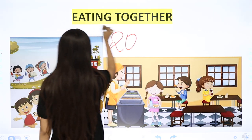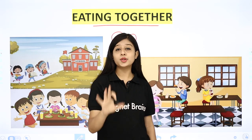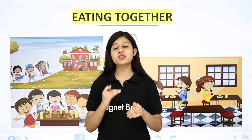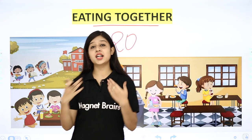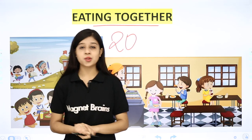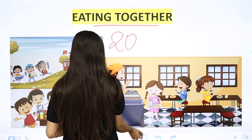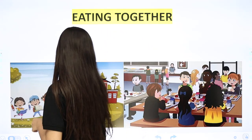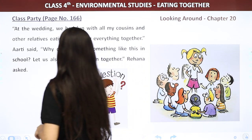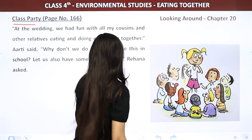This chapter is basically about that only — ki kaise eating together ek fun hai. Ismein kuch small-small stories hain jo hum saath mein read karenge aur unse related question and answers bhi saath mein discuss karenge. So let's start our very first story, which is Class Party.